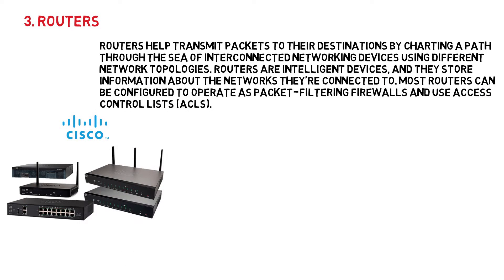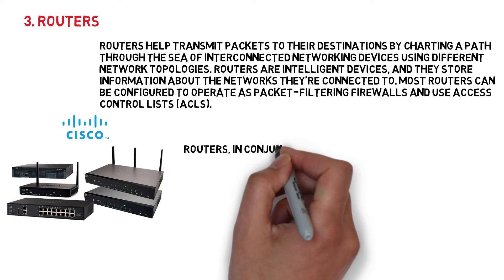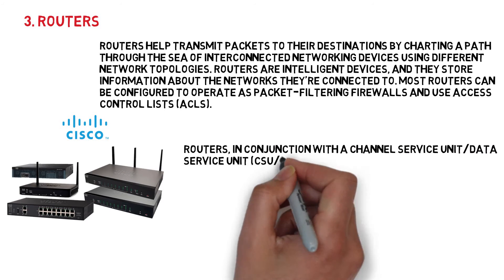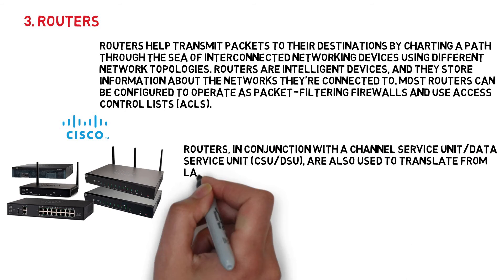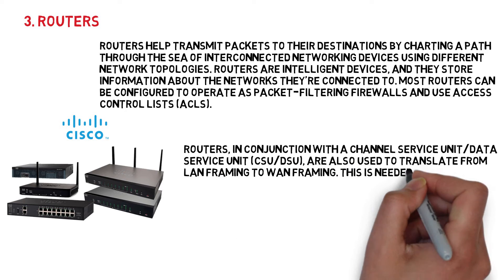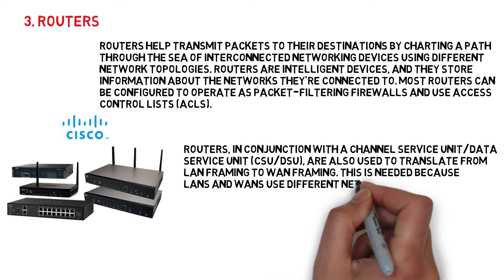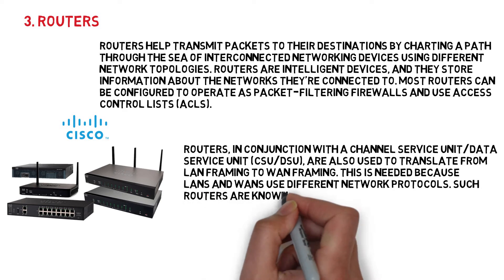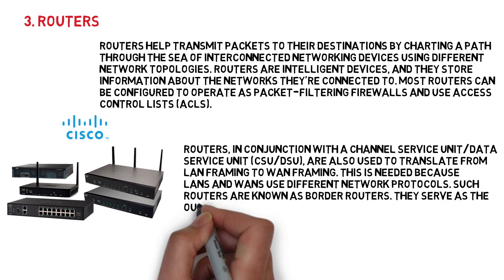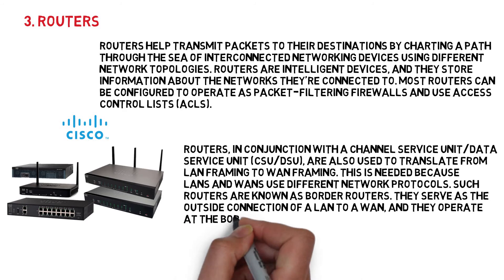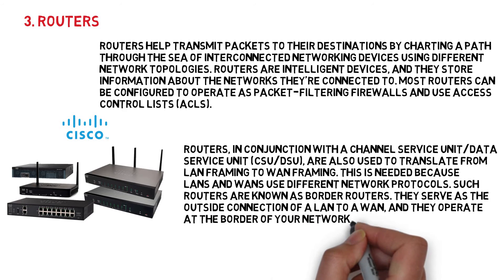Routers, in conjunction with a channel service unit/data service unit (CSU/DSU), are also used to translate from LAN framing to WAN framing. This is needed because LANs and WANs use different network protocols. Such routers are known as border routers. They serve as the outside connection of a LAN to a WAN, and they operate at the border of your network.